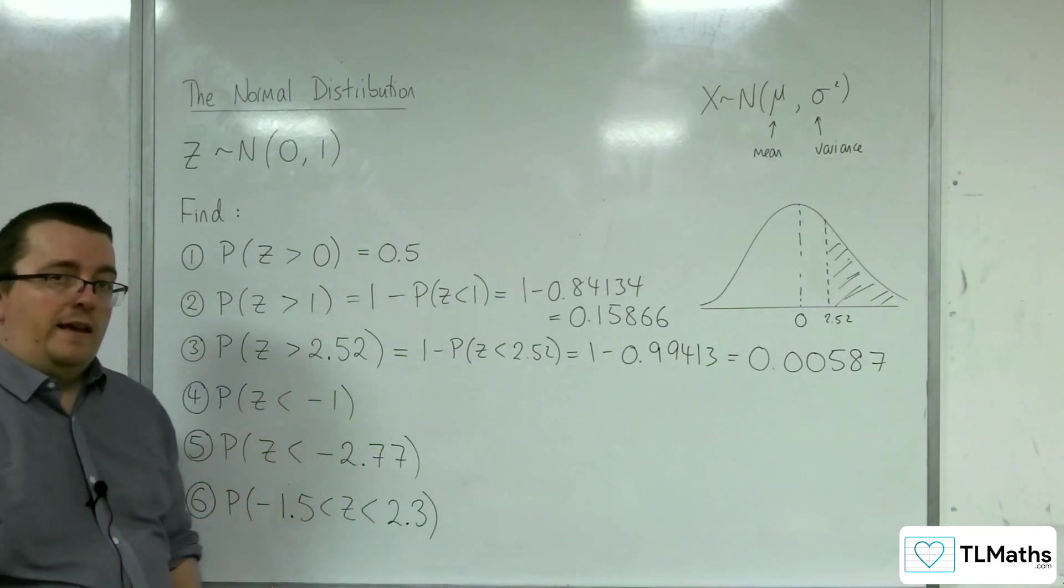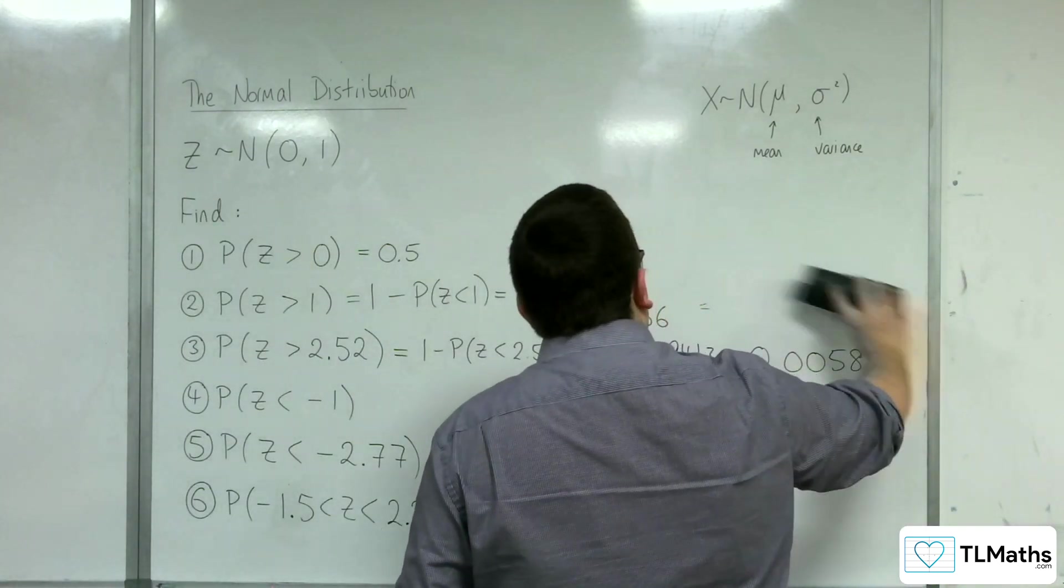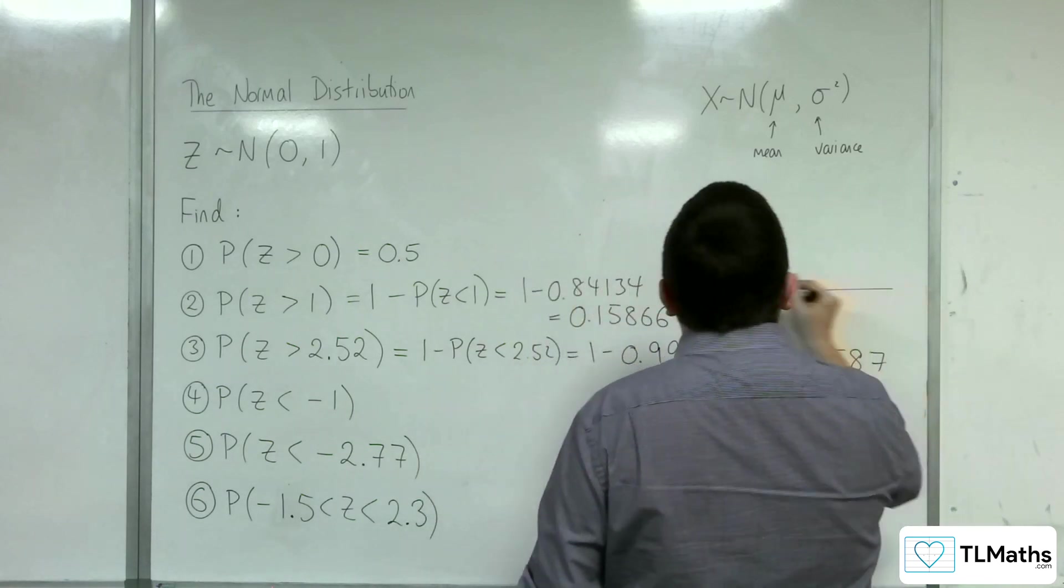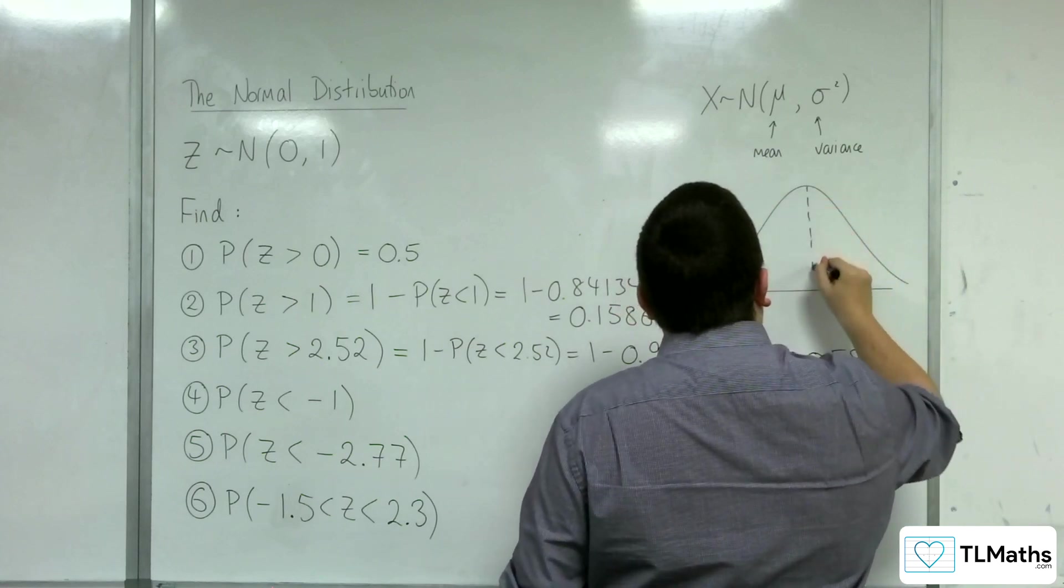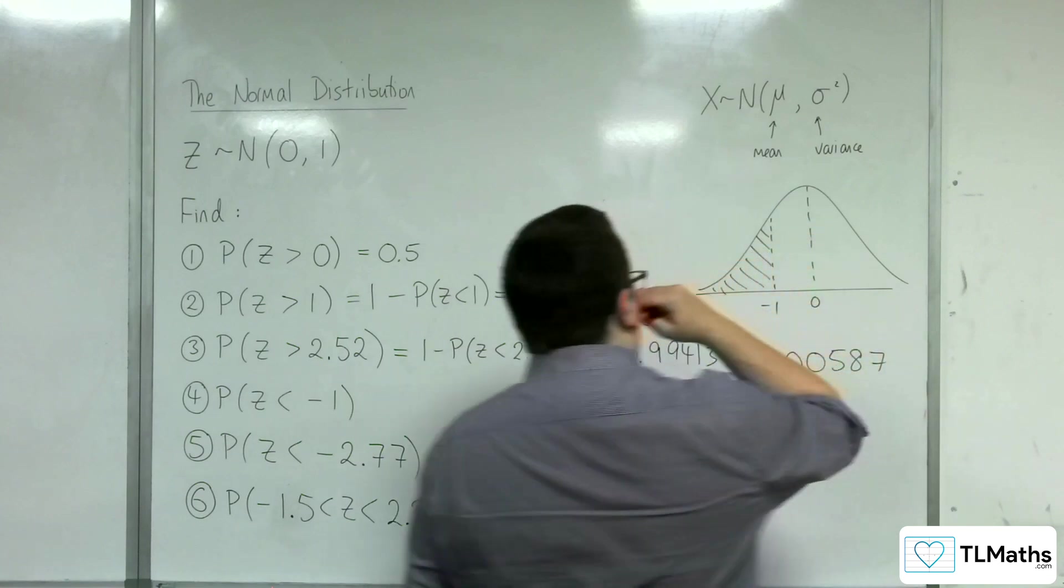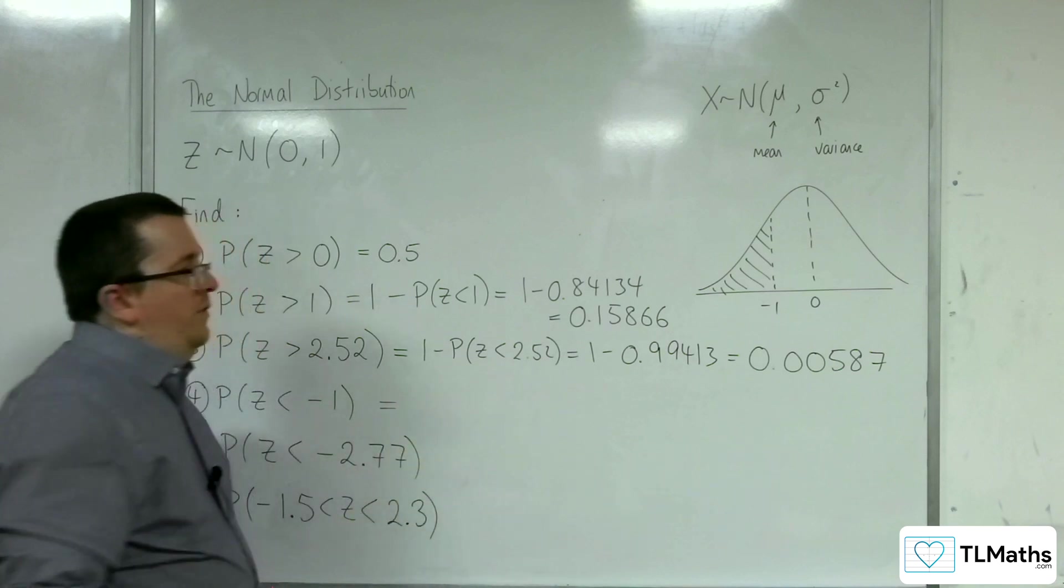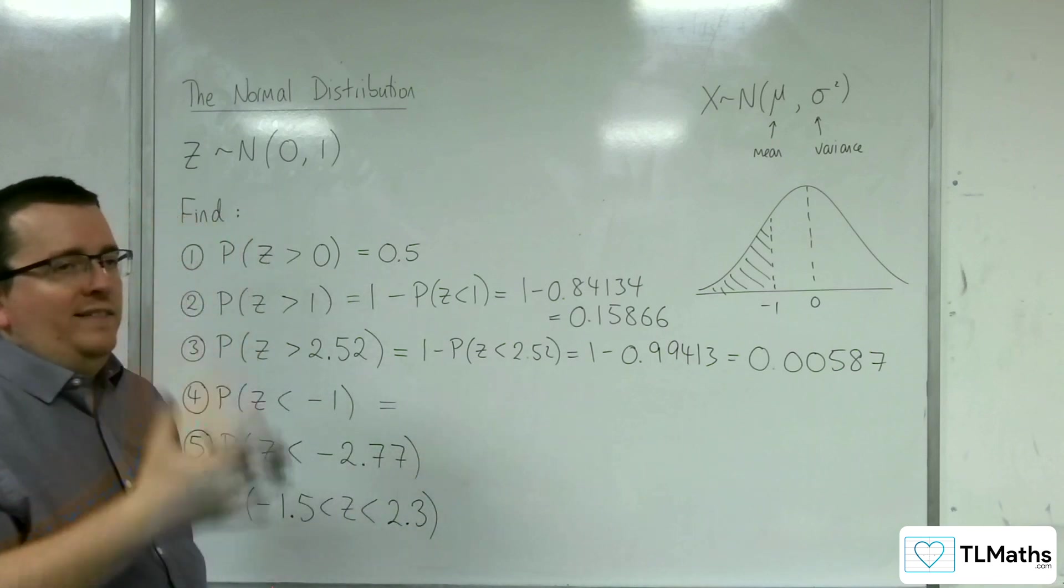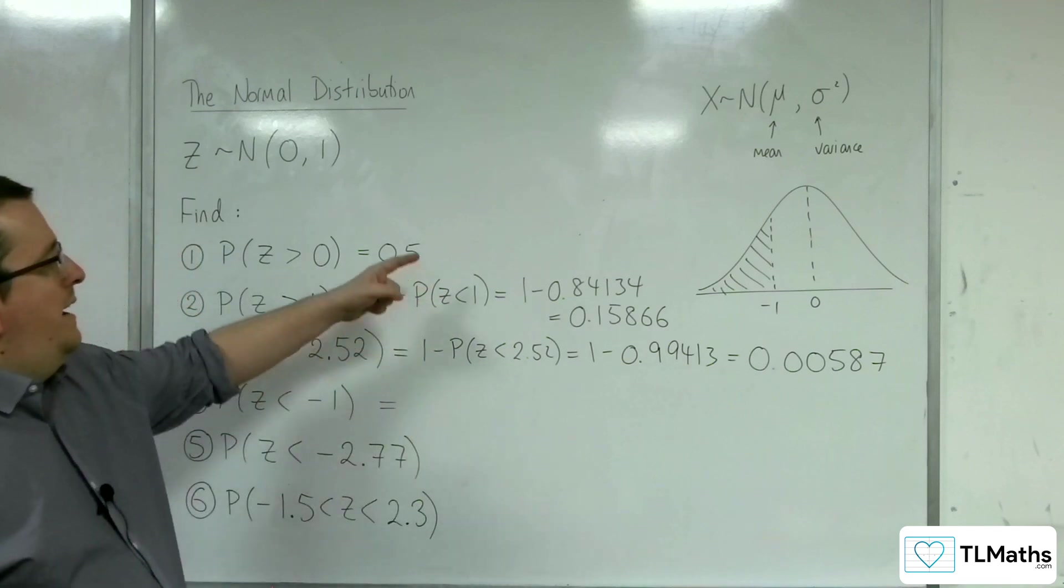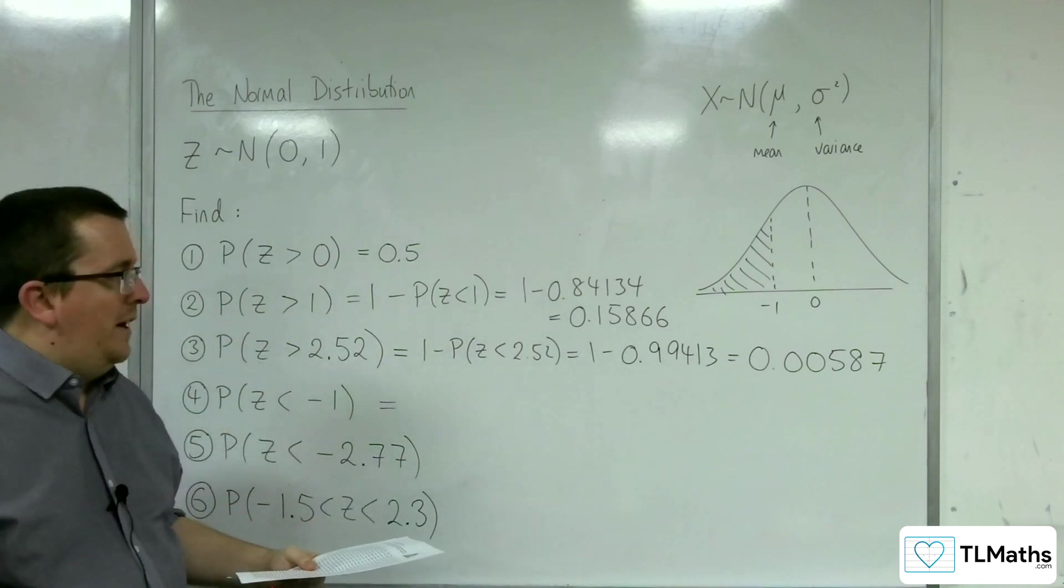Right, so that's how we deal with greater thans. Well, I'm just going to get myself a new diagram. Right, because now we'll look at the probability of Z being less than minus 1. So minus 1 is down here. What's the probability then of being less than minus 1? Well, the thing about that is that I don't have any negative values in my tables either.